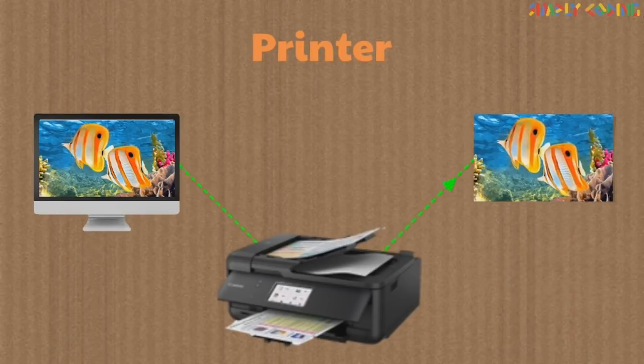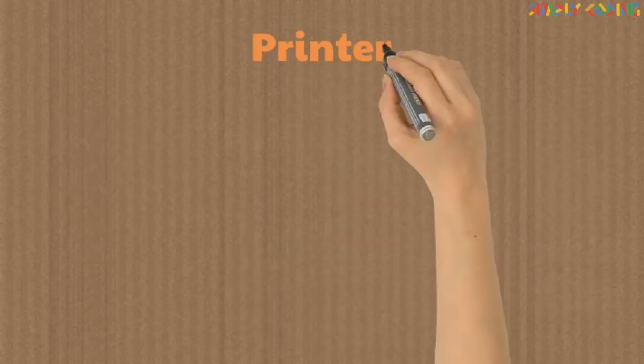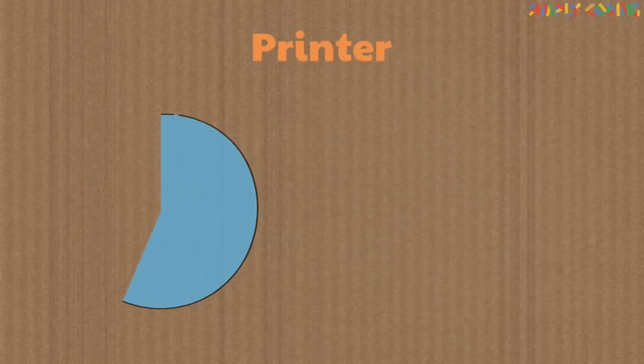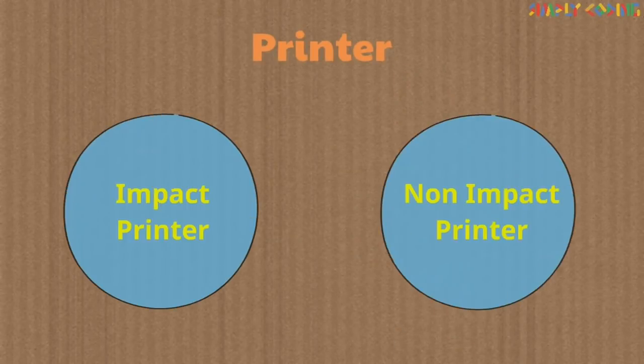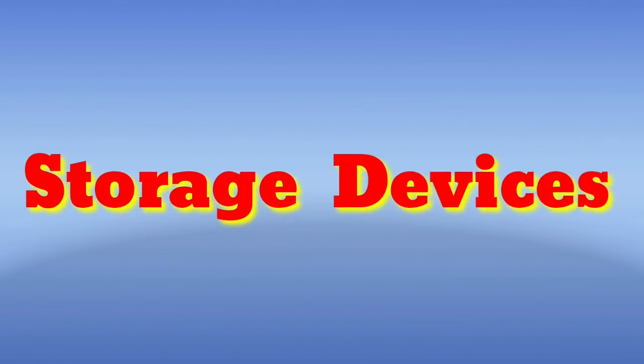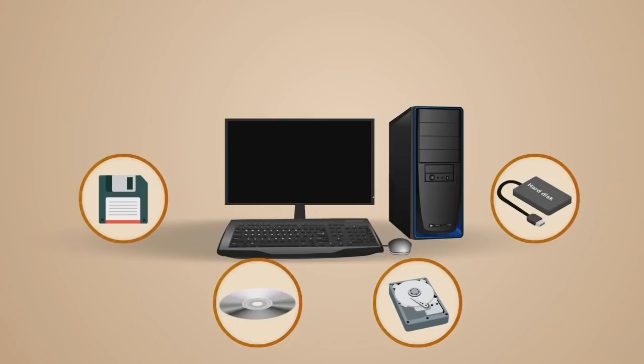A printer takes electronic data from a computer and generates a hard copy of it. There are two types of printers: impact printers and non-impact printers. Next we are going to learn about storage devices.